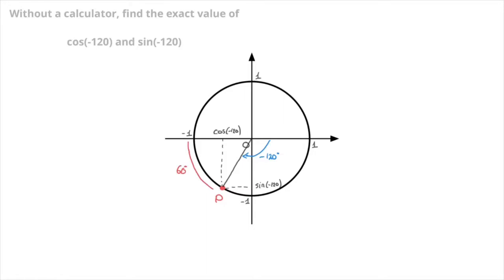Now that we've done that, we look at the point diametrically opposite point P on the circle, and we define it as a new point, point Q. Using symmetry here, we can see that the angle that point Q corresponds to must equal the angle separating P from 180 degrees — that was 60 degrees. So we can add that to our diagram right here: 60 degrees. And by definition, point Q has coordinates cosine of 60 and sine of 60.